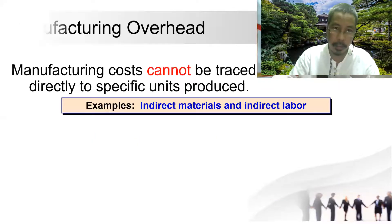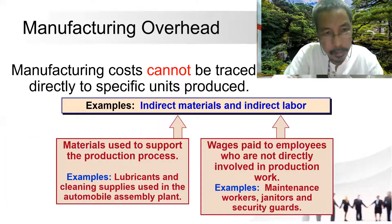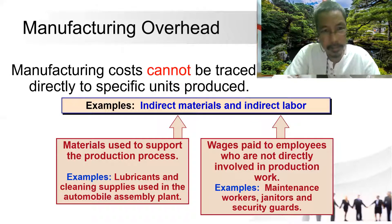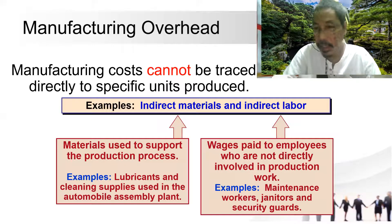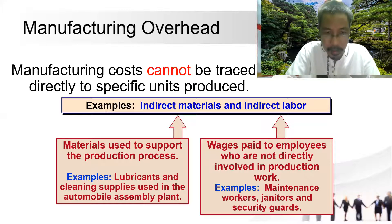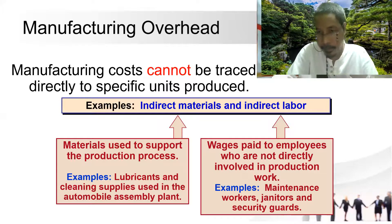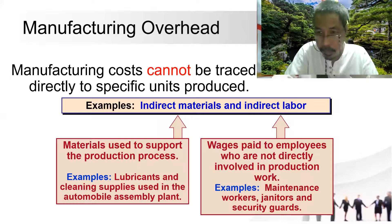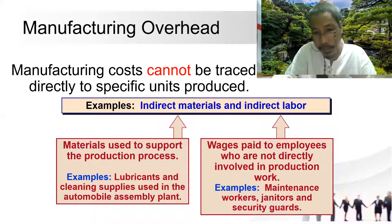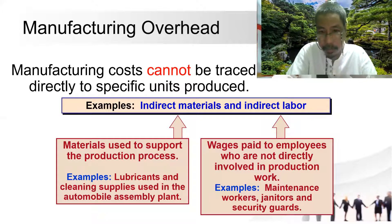Manufacturing overhead includes those costs that cannot be traced directly to specific units. Examples include indirect materials and indirect labor. Indirect materials are materials used to support the production process — for example, lubricants and cleaning supplies used in an automobile assembly plant. Indirect labor is paid to employees not directly involved in production, such as maintenance workers, janitors, and security guards.